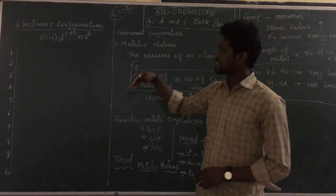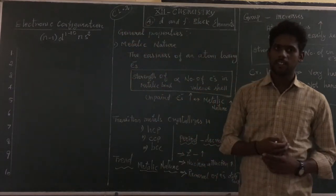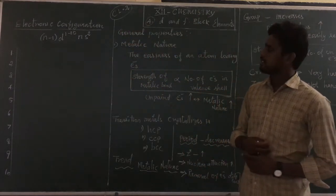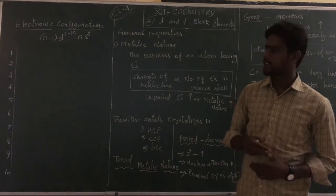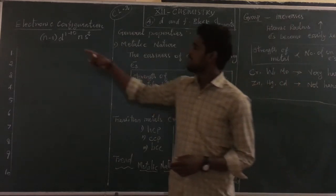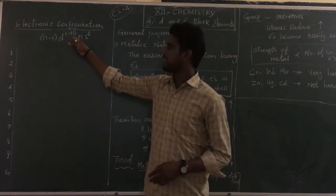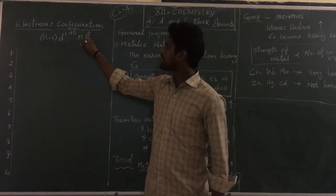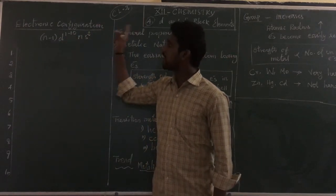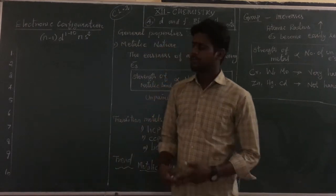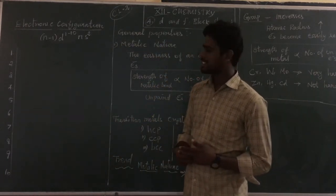In this section, we are going to discuss the general electronic configuration of transition elements, which is (n-1)d¹⁻¹⁰ ns². This is the common electronic configuration for d-block elements, that is transition elements.